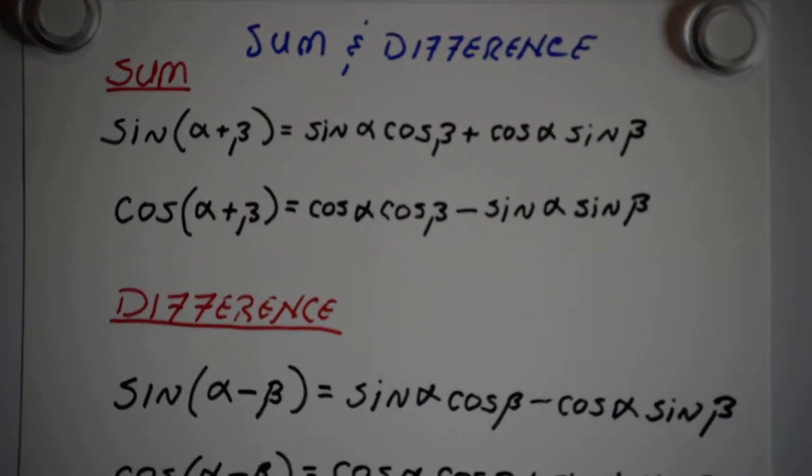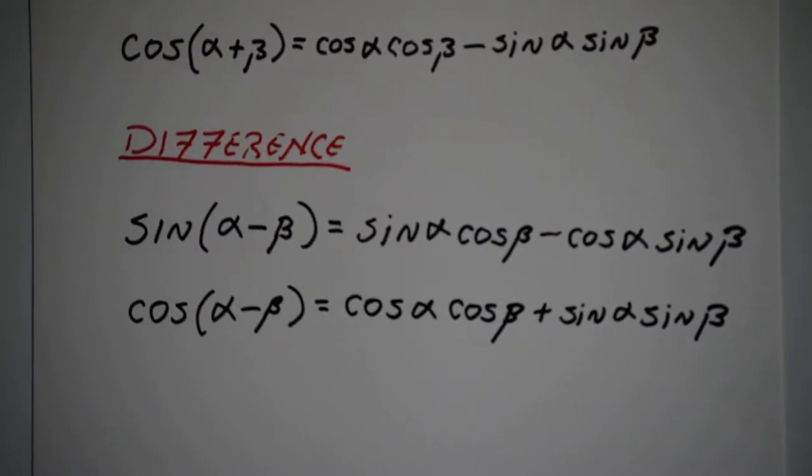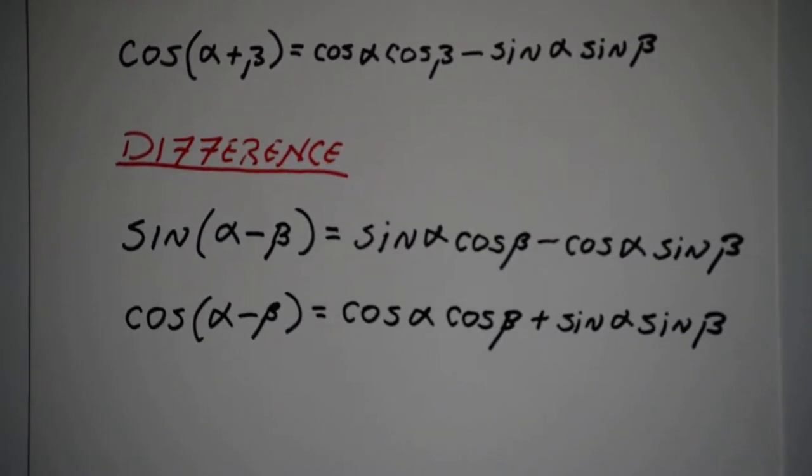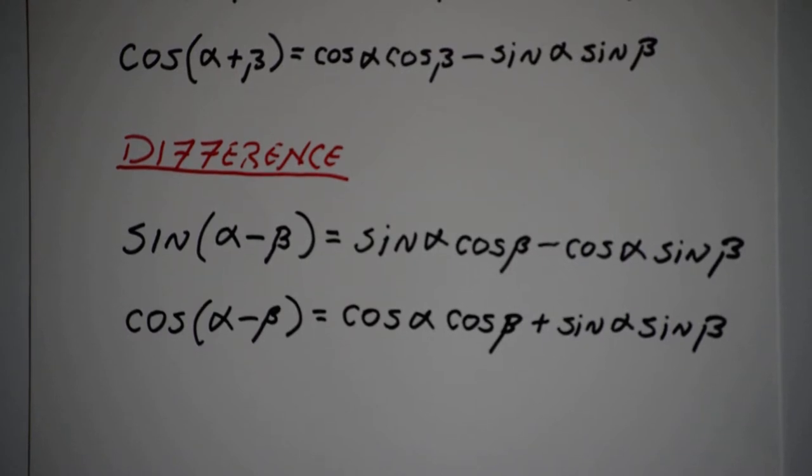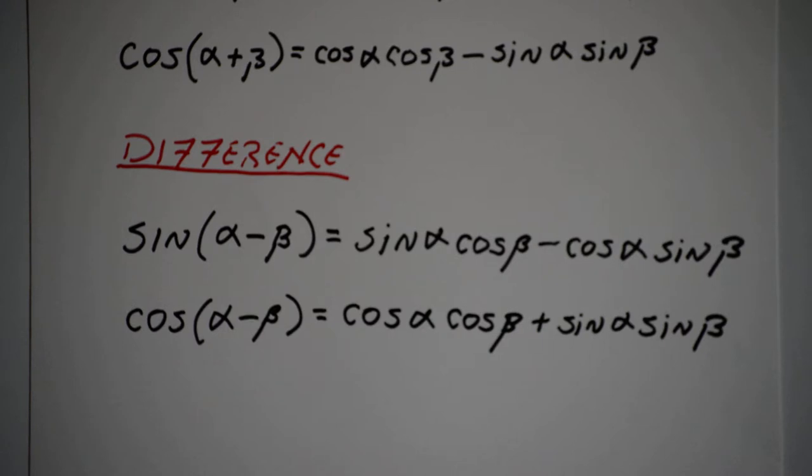For the difference formulas, I have the sine of alpha minus beta equals the sine of alpha times the cosine of beta minus the cosine of alpha times the sine of beta. For the cosine, cosine of alpha minus beta for my difference formula is equal to the cosine of alpha times the cosine of beta plus the sine of alpha times the sine of beta.